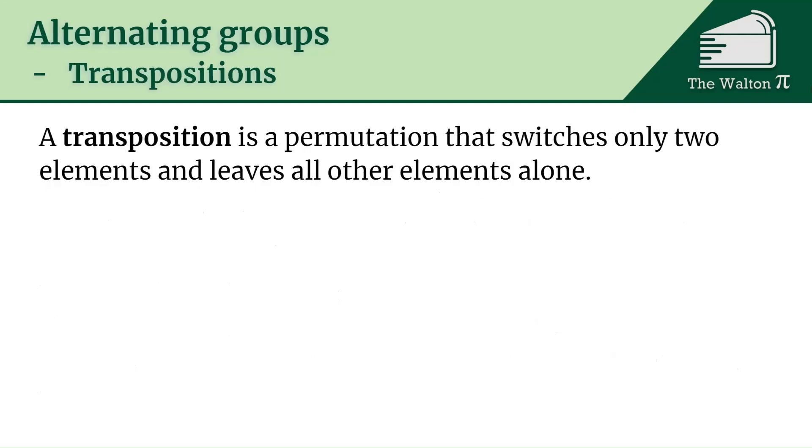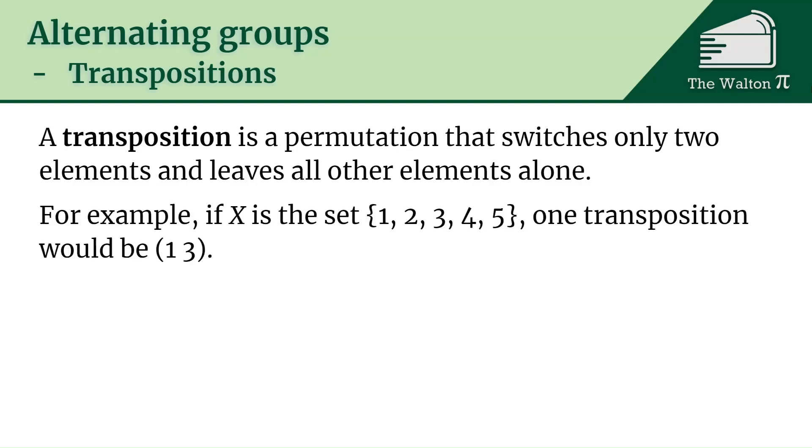A transposition is a permutation that switches only two elements and leaves all other elements alone. For example, if our set is 1, 2, 3, 4, and 5, a transposition is (1 3). 1 goes to 3, 3 goes to 1, and 2, 4, and 5 map to themselves.